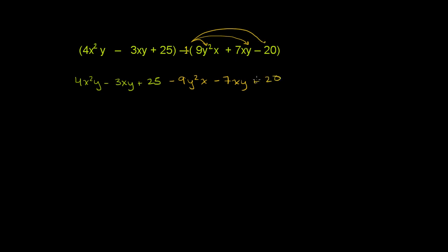Now we just have to add these terms, and we want to group like terms. So let's see. Is there another x squared y term anywhere? I don't see one, so I'll just rewrite this. We have 4x squared y.